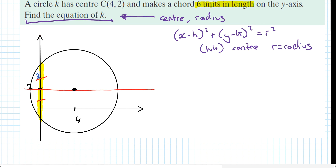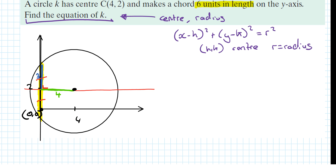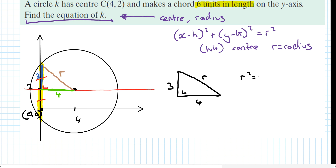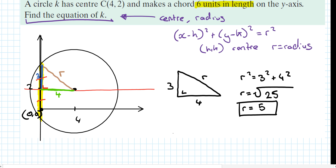This half-chord line is 3 long and there's a right angle. The green line from the origin to the center along the x-direction is 4 units long and the half-chord is 3 units long. I want to find the radius, and I can see a right angle triangle: 4, 3, radius. r squared equals 3 squared plus 4 squared, so r equals the square root of 25, which is 5.